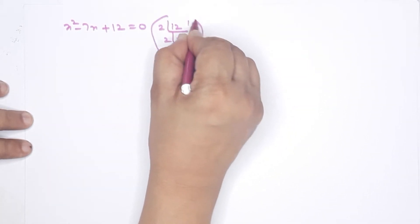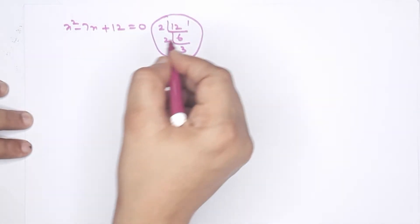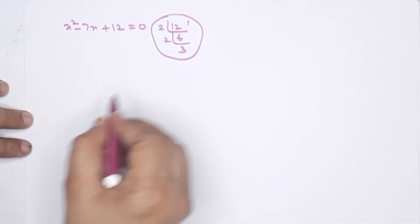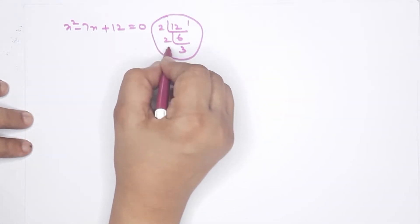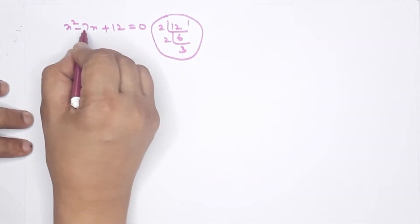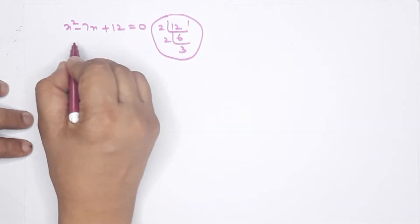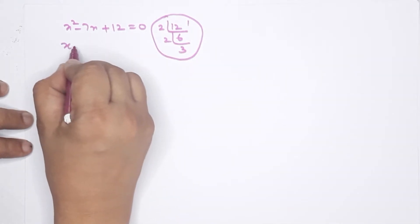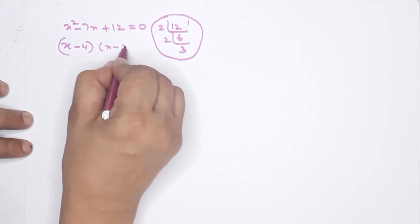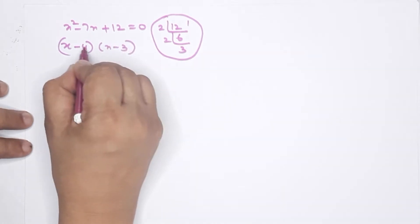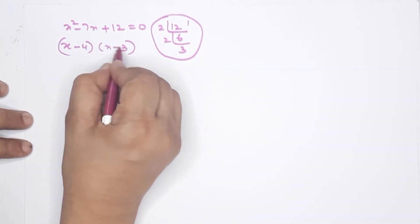We need to think about this: if you add two numbers, the result is 7, and their product is 12. We find x-4 and x-3. We multiply these two numbers to get 12 and add to get 7.